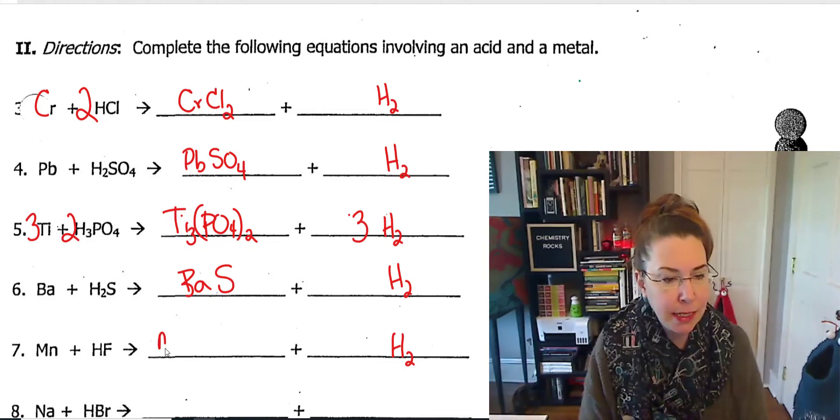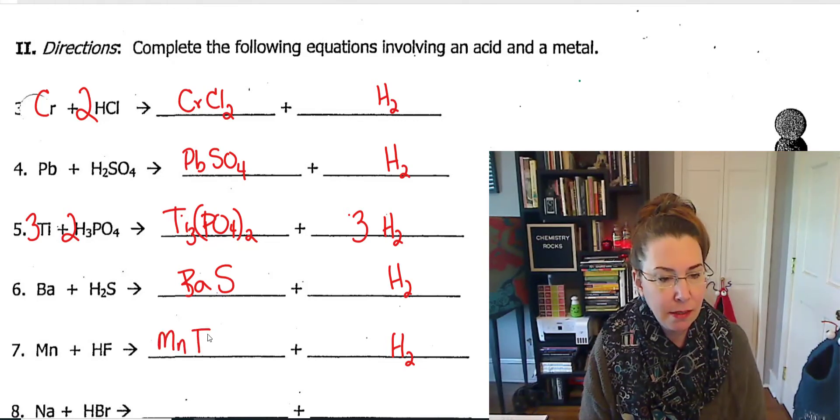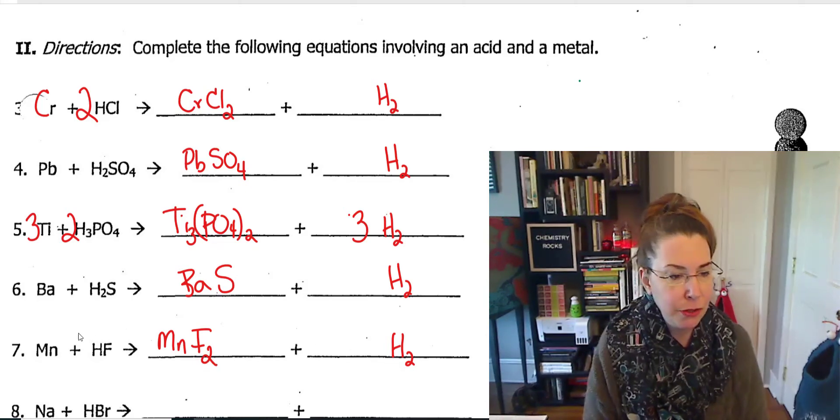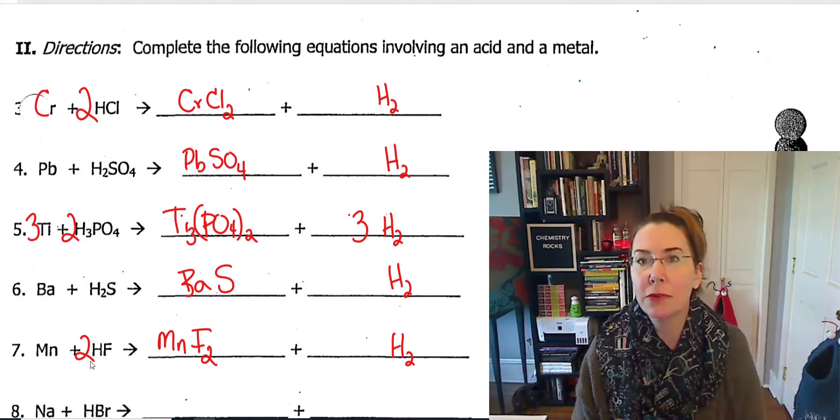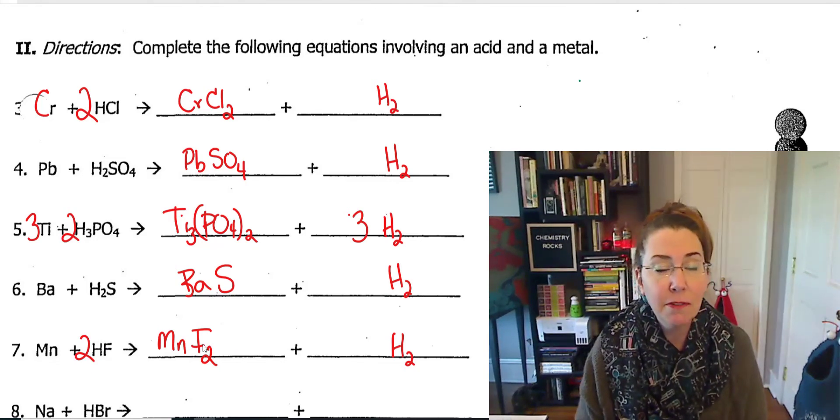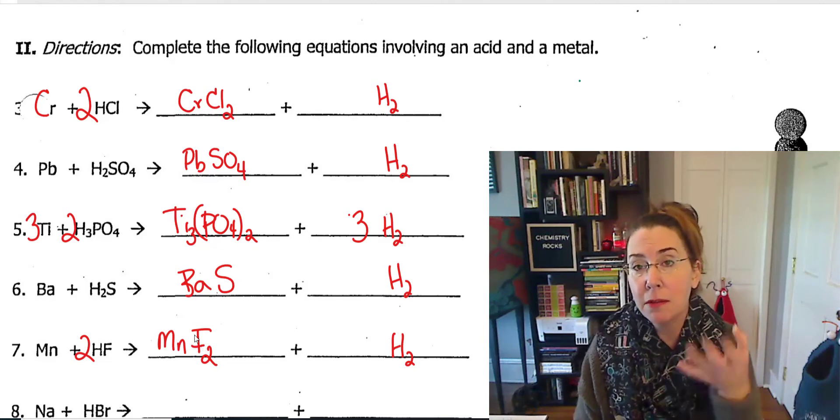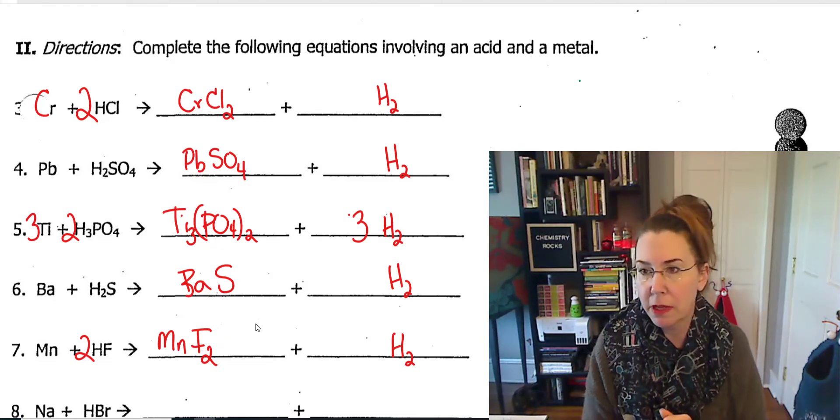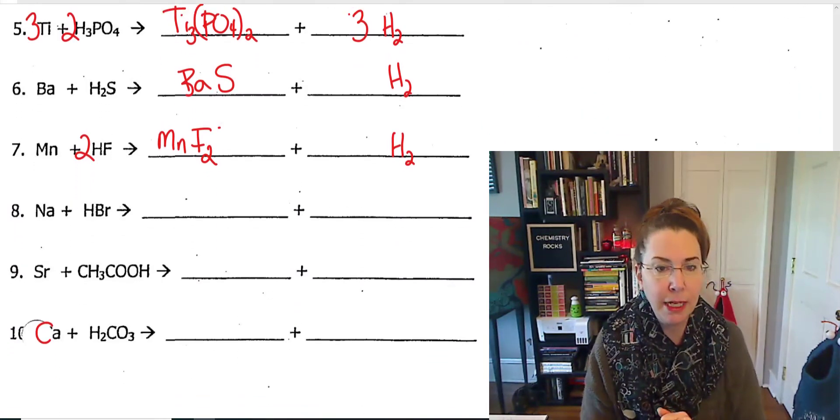Our next one is manganese fluoride as our salt and H2. To balance that, we're just going to throw a 2 in front of that hydrofluoric acid. Fluorine has a charge of minus 1, manganese has a charge of plus 2. That's why we had to do that for our subscripts.